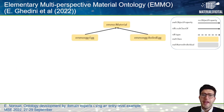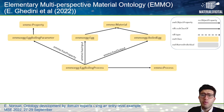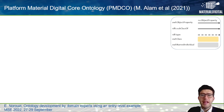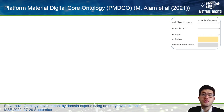EMMO is a well-known ontology in materials science and modeling. Here, egg class is introduced as a subclass of EMMO material, and the boiling process is introduced with the input, some properties, and also some processing steps.